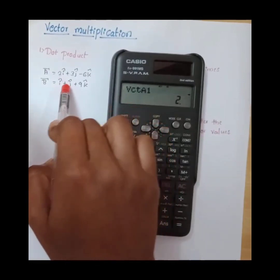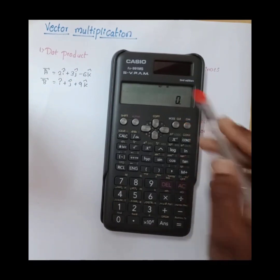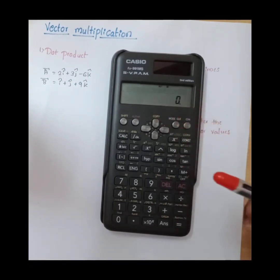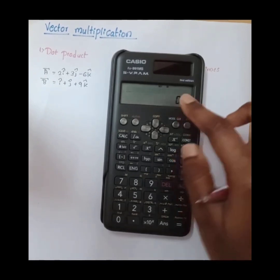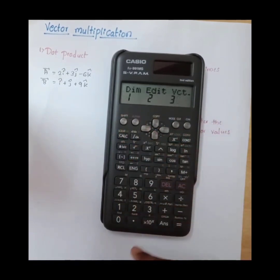Now we have to enter the vector B values. For that, come back by pressing ON button—don't worry, those values are stored in the calculator. Again press shift and five to enter vector B values.